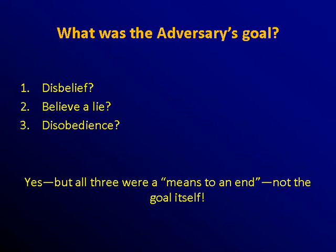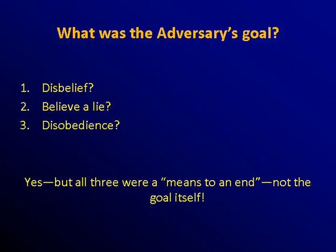What was his goal? Disbelief — yes, he wanted her to disbelieve God, and he provided what appeared to be an absolutely airtight experiment where he served as his own control. Believe a lie? Well, this was a lie — he wanted her to believe that the fruit carried a lot of great information, which I'm going to suggest it did not. He wanted her to disobey? Yes, but was that his end point? No — he wanted all three of those things, but he wanted them to provide stair steps to get her to where he really wanted her to go.